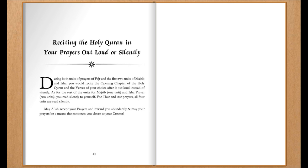Reciting the Holy Quran in your prayers out loud or silently. During both units of the Fajr prayer, and the first two units of Maghrib and Isha, you would recite the opening chapter of the Holy Quran and the verses of your choice after it out loud instead of silently. As for the remaining unit of Maghrib and the last two units of Isha, you read silently to yourself. For Zuhr and Asr prayers, all four units are read silently.